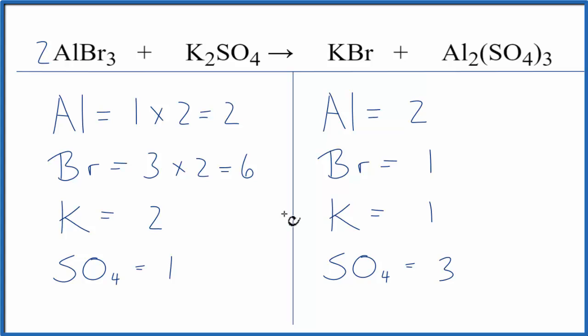I now have six Bromines. We could fix the Bromines by putting a six in front of the KBr, that would mean one Bromine times six, that would give us six. But now for the K, one times six, we have six Potassiums.